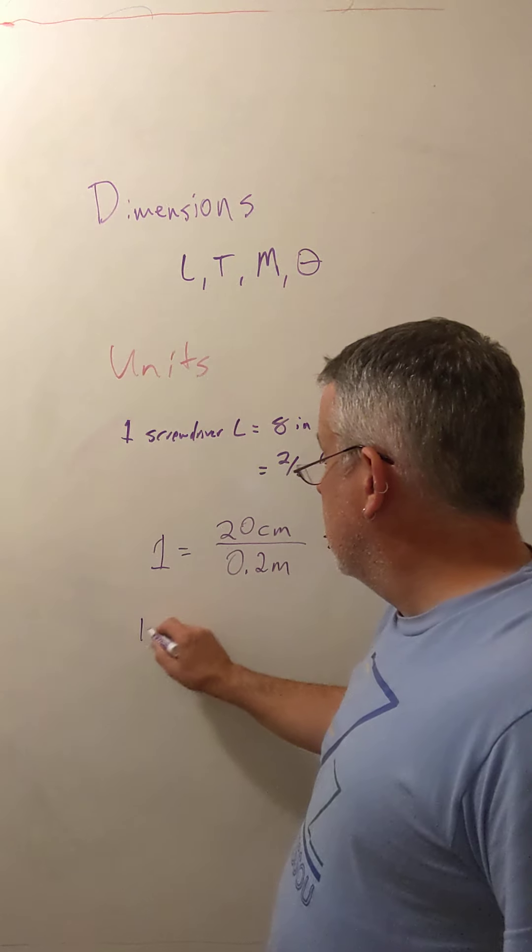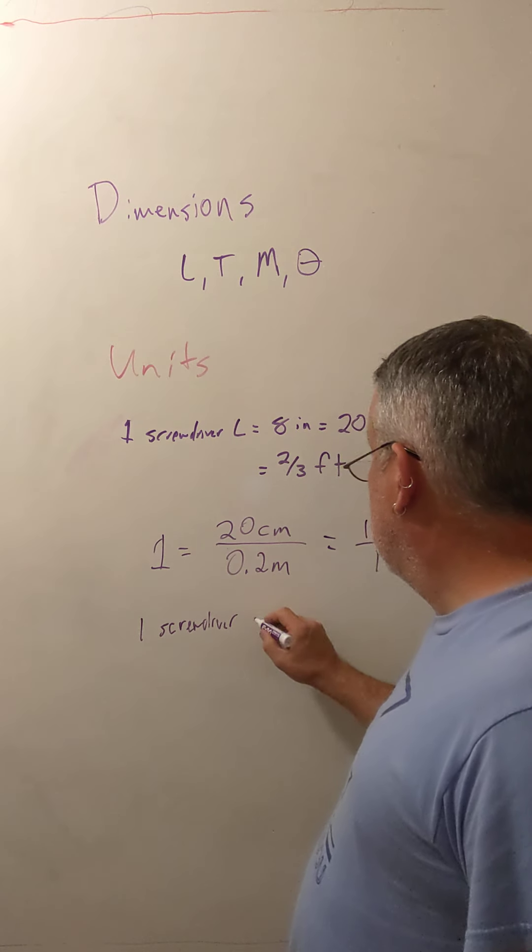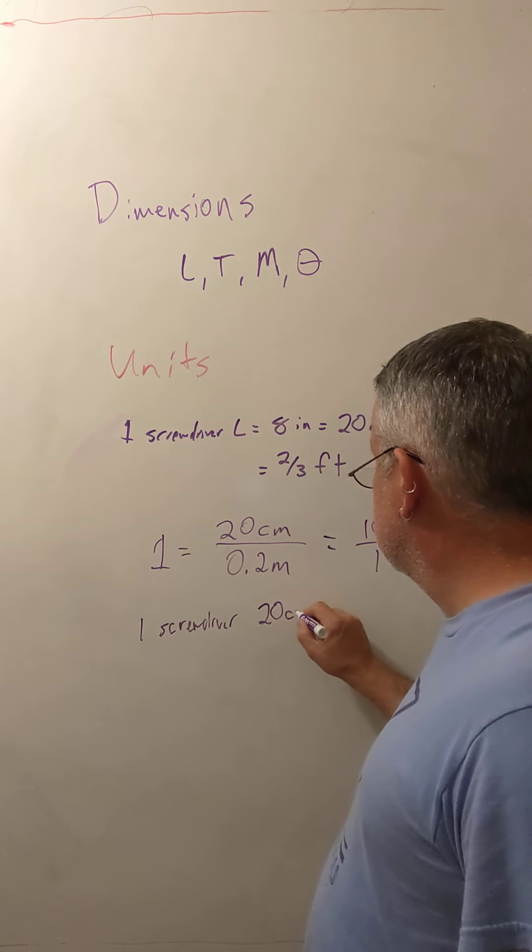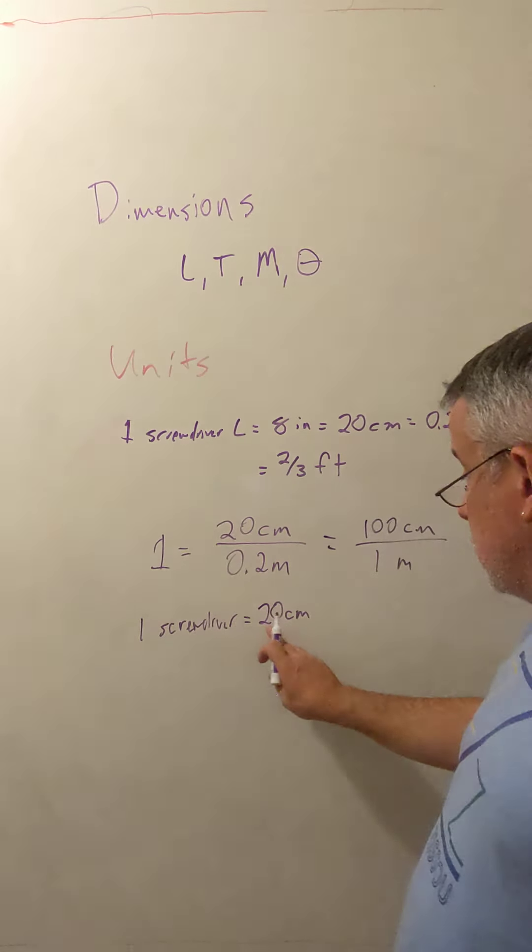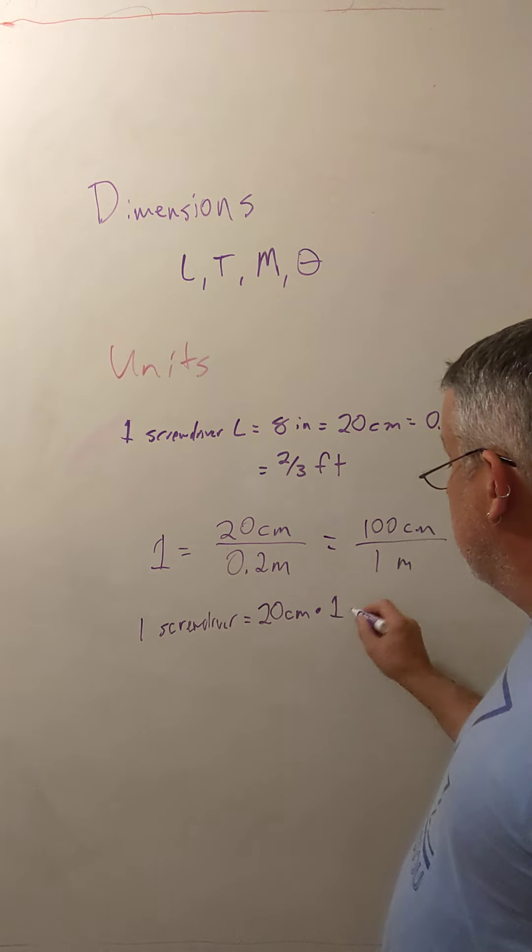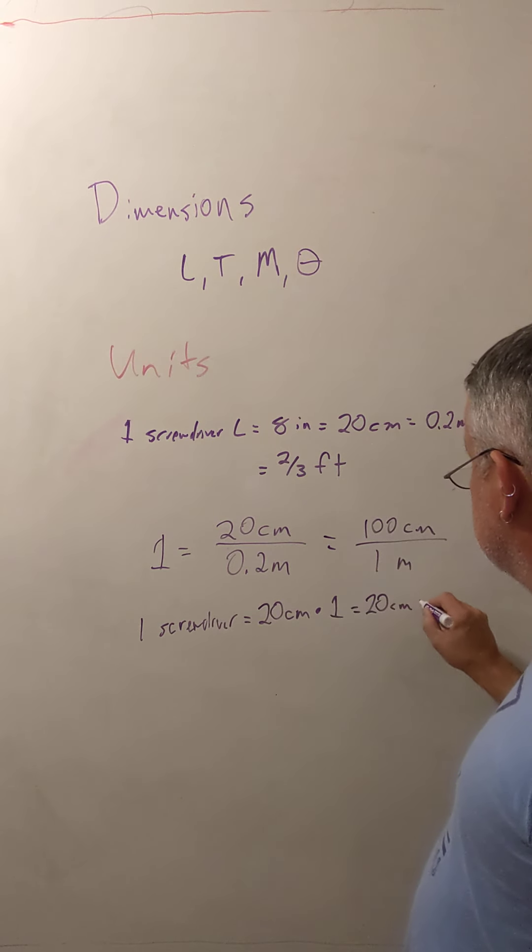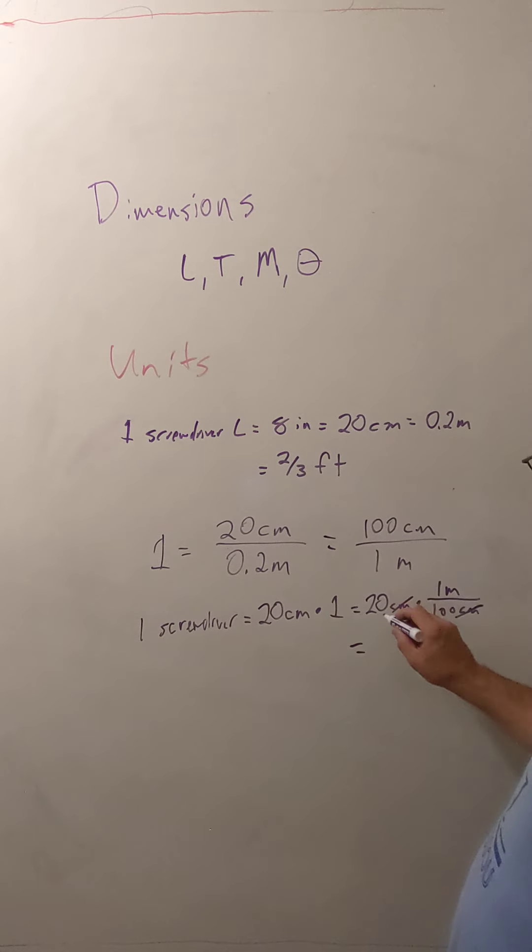So if I said I have one screwdriver, which is 20 centimeters, I might want to swap 20 centimeters for an equivalent amount in meters. And so I would multiply that times 1, but a fancy kind of 1, 20 centimeters times 1 meter divided by 100 centimeters. That's just the reciprocal of this version of 1. And now I can cancel the centimeter units, top and bottom, and I end up with 20 divided by 100, or 0.2 meters.